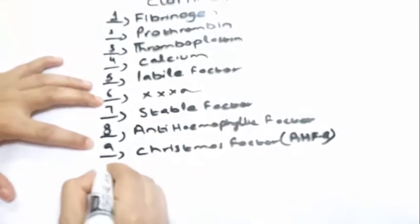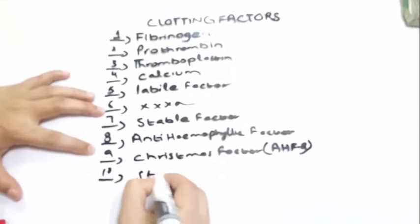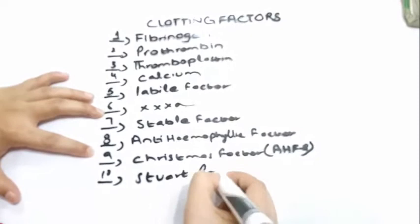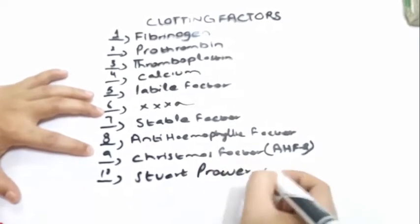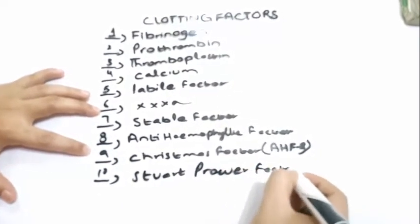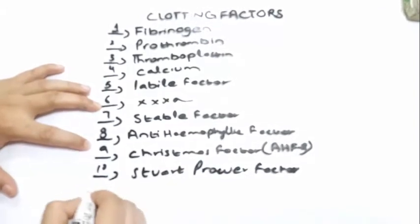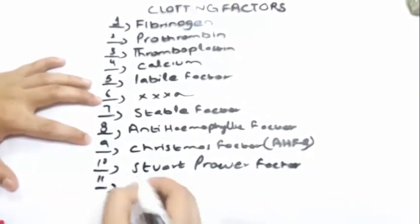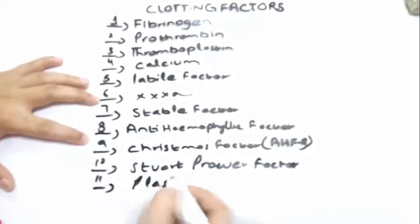Factor 10: Stuart-Prower factor. Factor 11: Plasma thromboplastin factor.